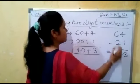Now we will make a table with ones here and tens here. In 64: 4 is in the ones place so we write 4 here, and 6 is in the tens place so we write 6 here. In 21: 1 is in the ones place so we write 1 here, and 2 is in the tens place.